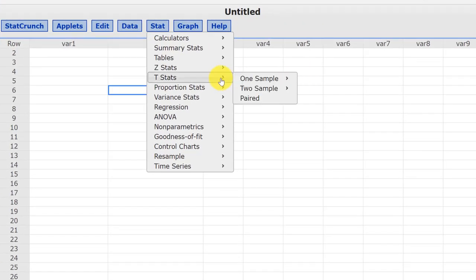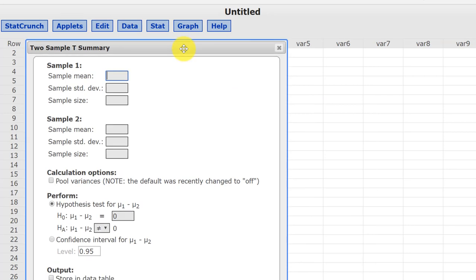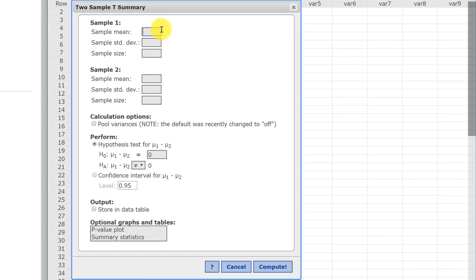So we go back over here to StatCrunch, and we go to t Stats. We've got two samples, and we've got summary data. So we bring up our dialog box, and we're going to enter this data: 1824, 1824, 18.